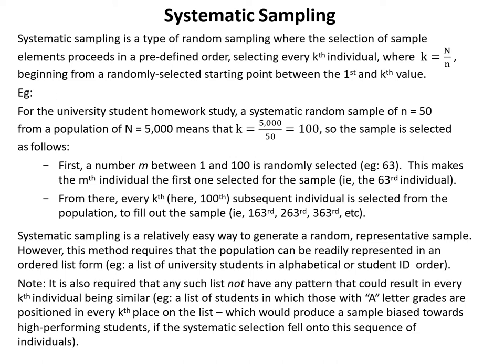The last type of random sampling we look at is called systematic sampling. In this method, we first look at our overall population size big N and our desired sample size little n. The ratio big N divided by little n gives us a number k, which is very important for this method. The way systematic sampling works is we go down the list of all individuals in the population and select every kth individual, beginning from some randomly selected starting point between the first and the kth value in the list.